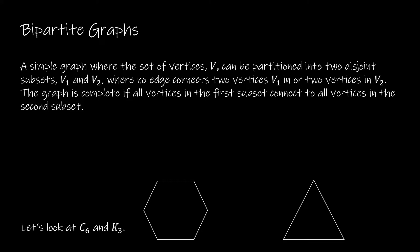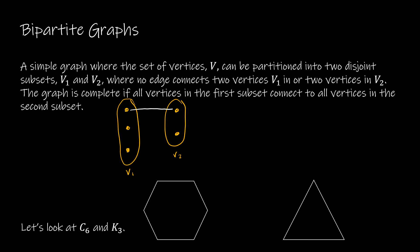When we have a bipartite graph, we have a set of vertices that can be partitioned into two disjoint subsets. Essentially, you have a group of vertices and you can have one set and another set. It doesn't matter if they're the same size, but within each set there's no overlap and no edge connecting any vertices in the first set. We'll call these V1 and V2, so when I draw an edge connecting two vertices, it has to go from one set to the other.